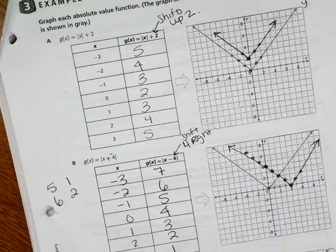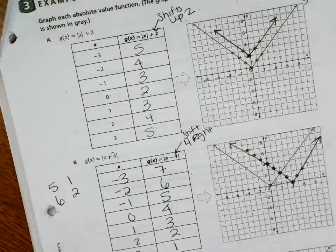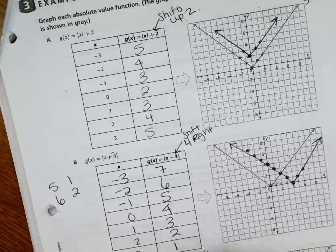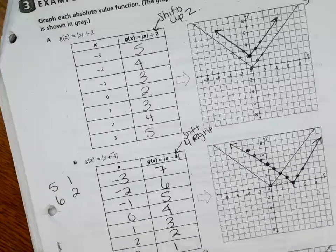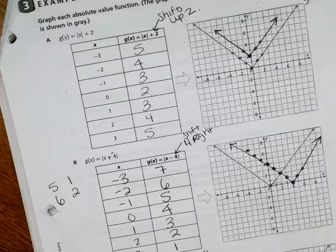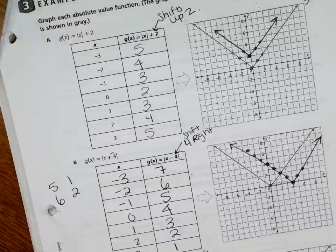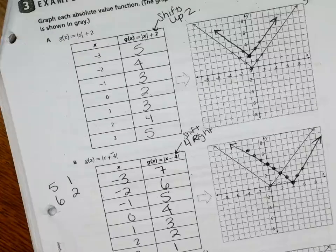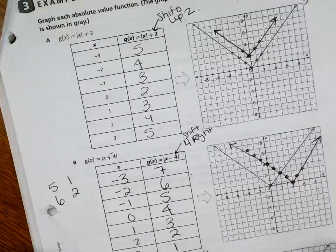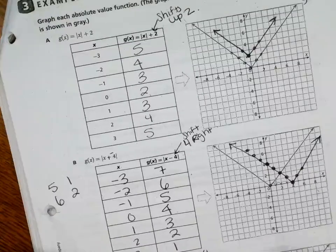So for y = |x − 4| + 2, we go right 4, up 2 to find the vertex. Going right 4 and up 2 from the origin gives the vertex at (4, 2), and the graph opens from there.